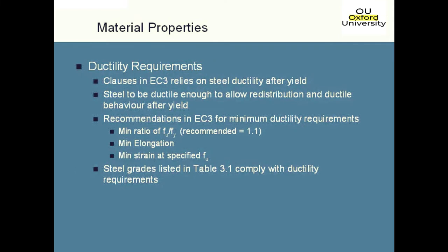There are also some ductility requirements given in the Eurocode. Many of the design clauses assume that the material used in steel components will be sufficiently ductile to enable redistribution and ductile behaviour after yield. The minimum acceptable ductility requirements include: a minimum ratio of FU/FY recommended to be 1.1 (in the UK changed to 1.2), a minimum elongation, and a minimum strain at the specified ultimate stress. All those items are nationally determined parameters, so they can vary from country to country. Generally the steel grades given in Eurocode 3 Part 1 Part 1 will automatically comply with these requirements.